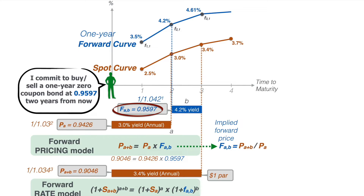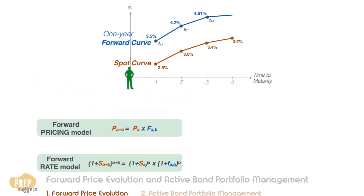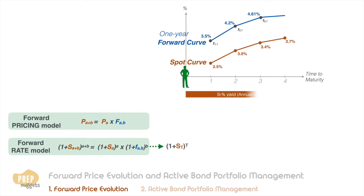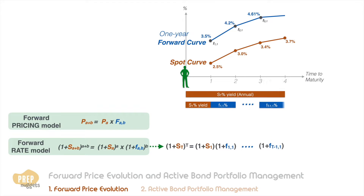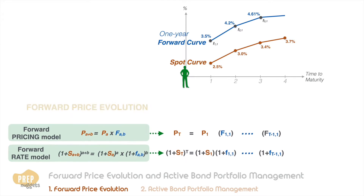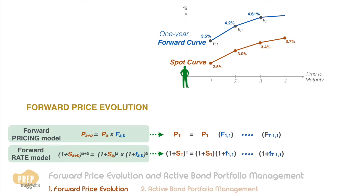The forward rate model can be extended to express any spot rate as the geometric mean of the one-year spot rate and a series of one-year forward rates. Likewise, the forward pricing model is extended to express the price of any zero coupon bond as the price of a one-year zero coupon bond and the price of a series of forwards. This has bearings on the forward price evolution of a zero coupon bond. For our example, if an investor buys a three-year zero coupon bond at the three-year spot rate of 3.4 percent, the bond would be priced at 0.9046 today.